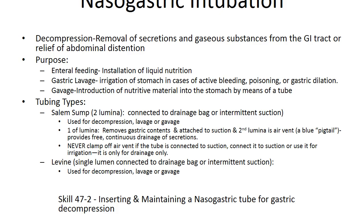The Salem sump tube has two lumina: one removes gastric contents and is attached to suction; the second is an air vent — the blue pigtail — which provides free continuous drainage of secretions. Never clamp off the air vent if the tube is connected to suction; it is only used for drainage, not for irrigation.